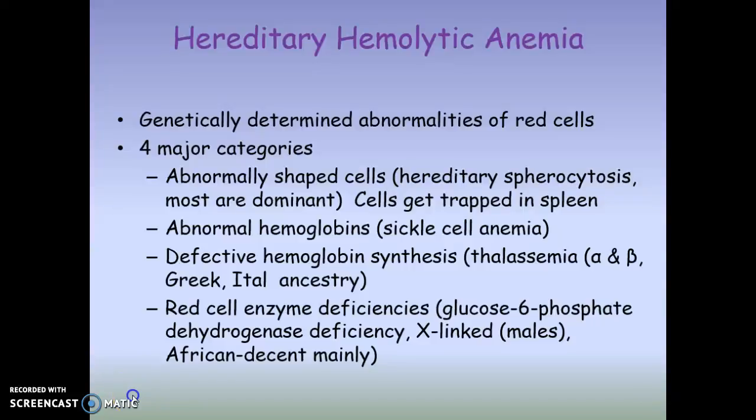Here we go with part 3 of chapter 21. Before we get into the hereditary hemolytic anemias, let's first remind ourselves of what anemia is. The physiological manifestations of the disease include a reduced oxygen carrying capacity of the red blood cells. This could be due to the red blood cells not being in the proper shape, or because they lack the proper hemoglobin content.